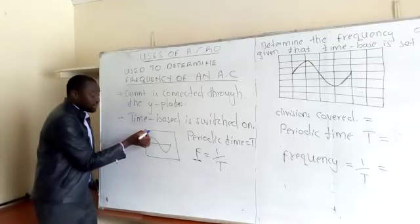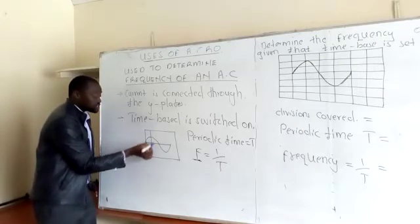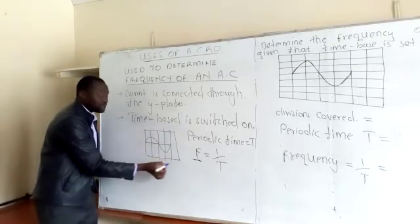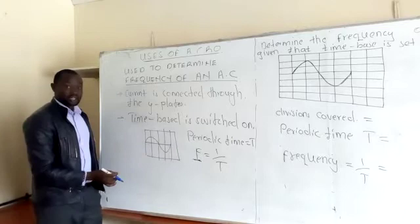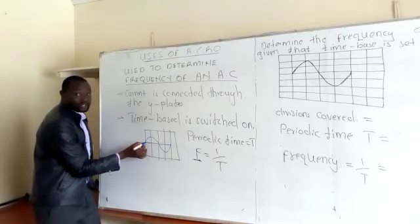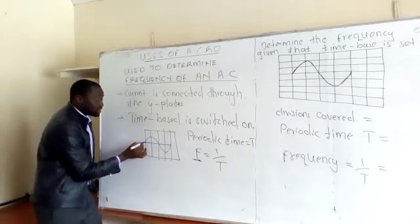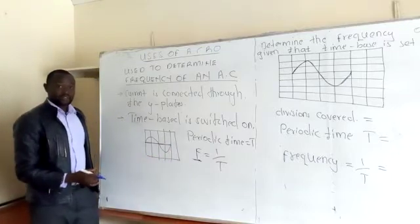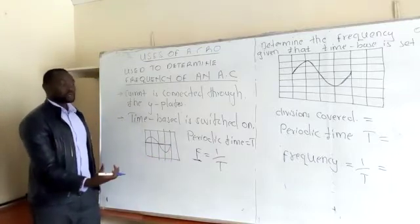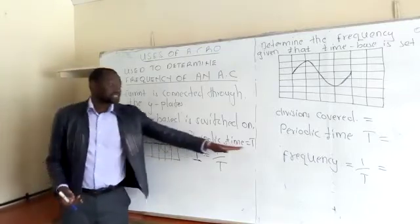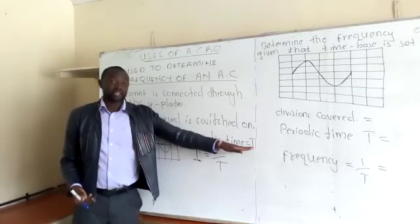Time to complete one wave is the periodic time. When we have the periodic time calculated in seconds, we'll be able to determine the frequency, which is the reciprocal of the periodic time.